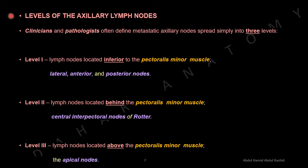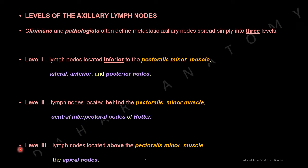Levels of the axillary lymph nodes. Clinicians and pathologists often define metastatic axillary node spread into three levels. Level 1: lymph nodes located inferior to the pectoralis minor muscle — these are the lateral, anterior, and posterior lymph nodes. Level 2: lymph nodes located deep to the pectoralis minor muscle. Level 3: lymph nodes located above the pectoralis minor muscle, that is the apical nodes. The more advanced the metastasis, the higher the level.